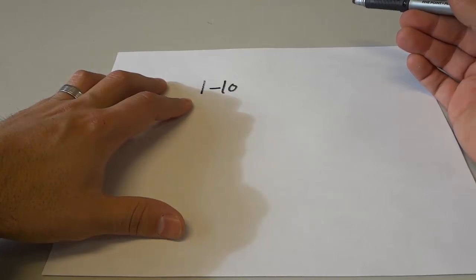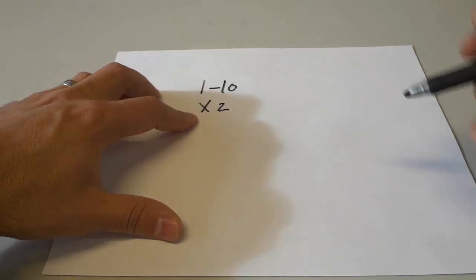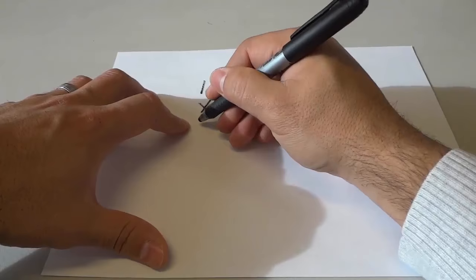Then you're going to ask them to multiply that number by 2. Next, you're going to tell them to take that answer and multiply it by 5.